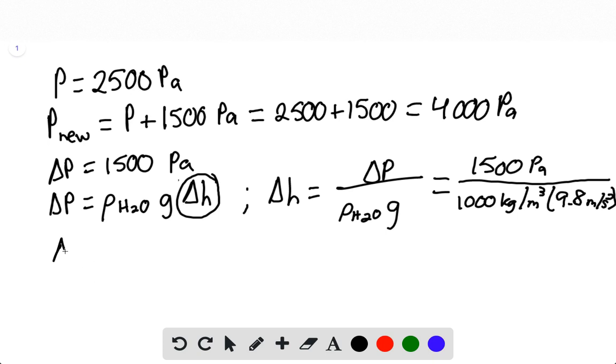Now solving for this we find that delta H is equal to 15.31 centimeters. So in order for the gauge pressure to reach 2500 pascals once again, the change in height of the water must decrease by 15.31 centimeters. And that's the end of the solution. Thank you for watching.